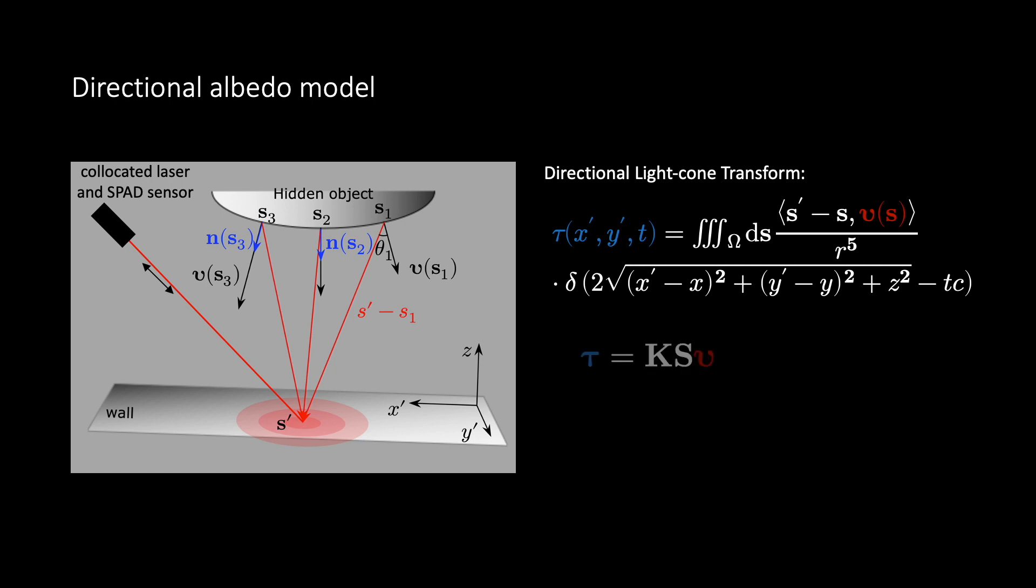In matrix notation, we now have tau equals ks epsilon. This is again a linear model due to the linearity of the projector s and the sensing matrix k. However, recovering the directional albedo epsilon from the measurements is still difficult due to the size and the unstructuredness of the sensing matrix k.